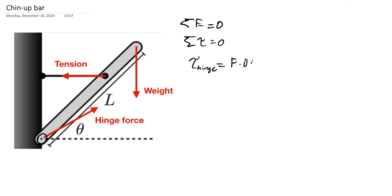So that's just F times zero times the sine of whatever angle is between the vector and the moment arm, but the moment arm is zero, so we have no torque. And I've picked that because I don't want to deal with the hinge torque. I can calculate the others.